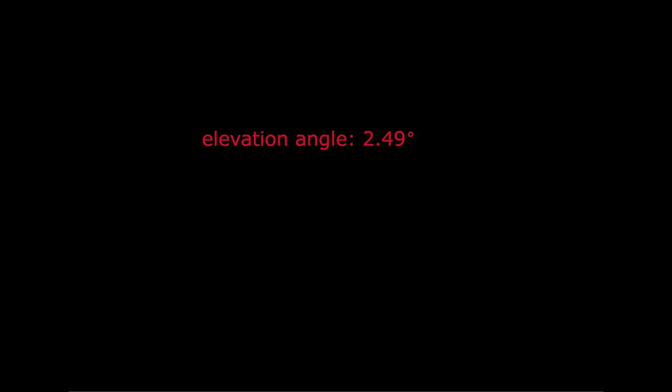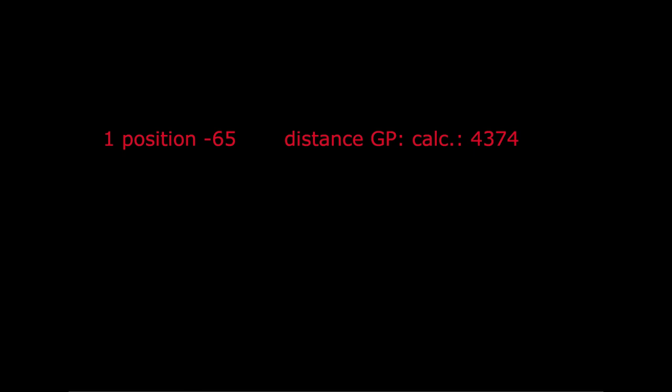The zenith angle is 90 minus 2.49 degrees equals 87.52 degrees. So the distance to the GP is 87.52 times 60 equals 5250.6 nautical miles. This is, as could be expected, 1.2 times as far as his first calculated distance to the GP.